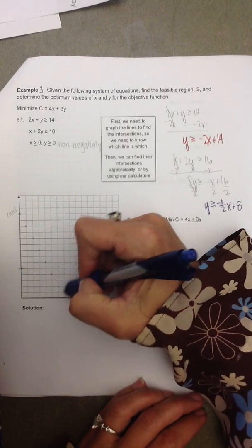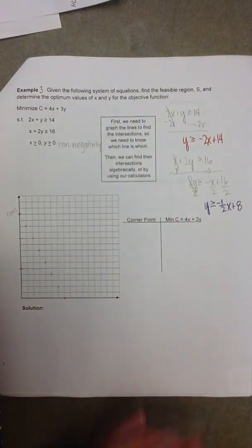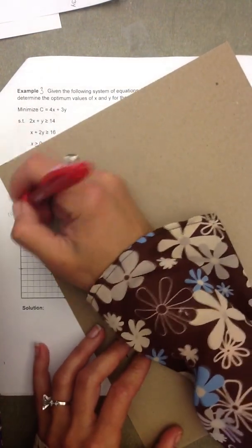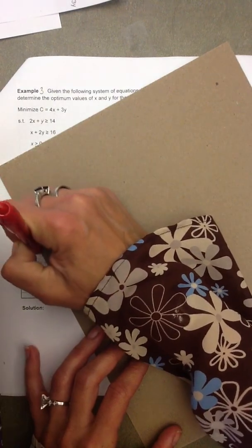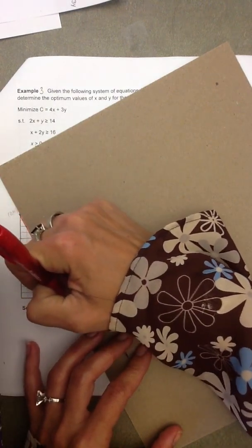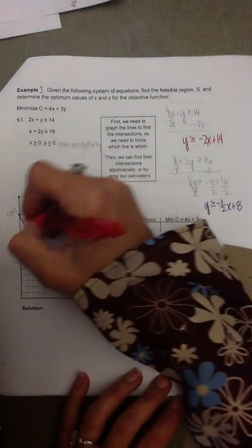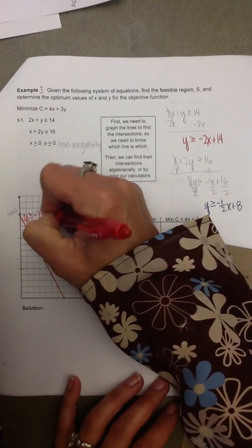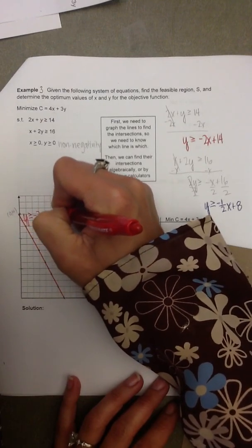to make sure that when I line up my straight edge I get a nice, accurate line. And I said I would be doing this first one in red.